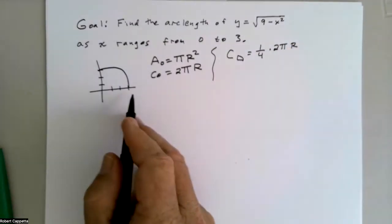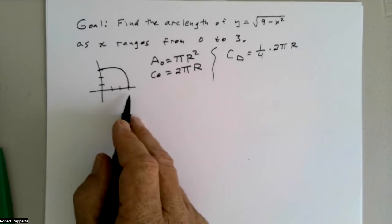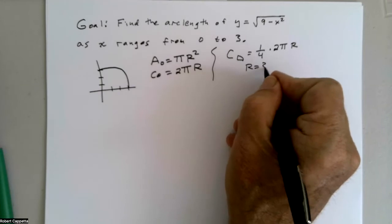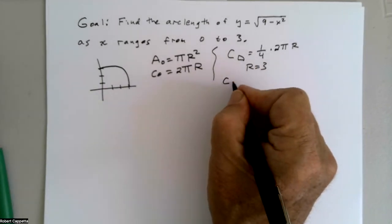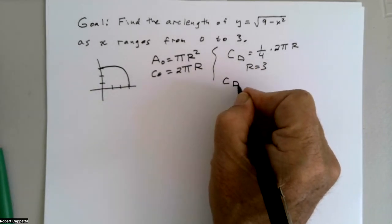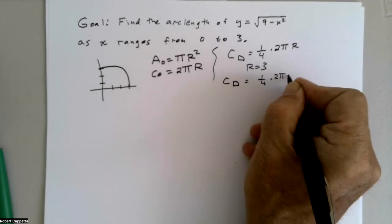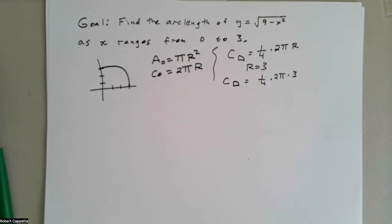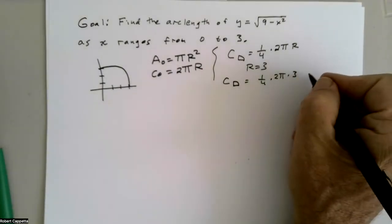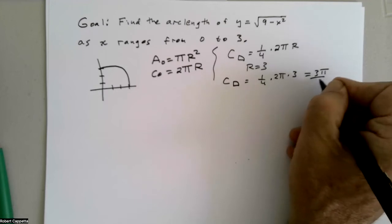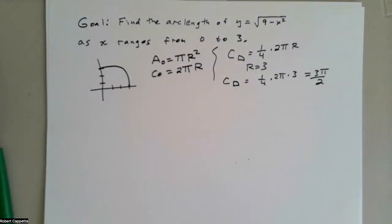In this case, the radius r is 3. So the circumference of that quarter circle — which is our arc length — is one-fourth times 2π times 3, which is 6π/4 or 3π/2. We're able to do that just by appealing to geometry.